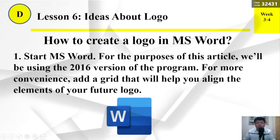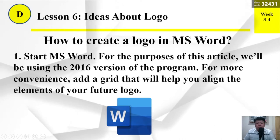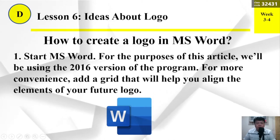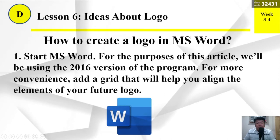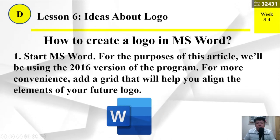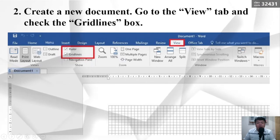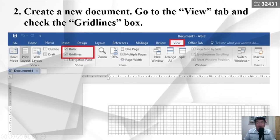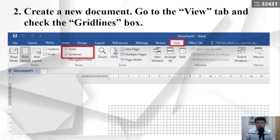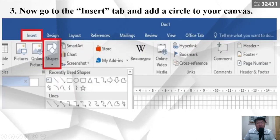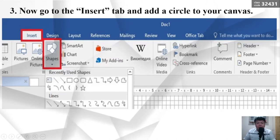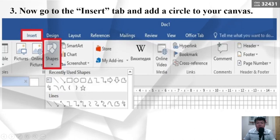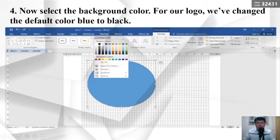How to create a logo in MS Word. Number 1: Start MS Word. For the purpose of this article, we'll be using the 2016 version of the program. For more convenience, add a grid that will help you align the elements of your future logo. Number 2: Create a new document, then go to the View tab and check the grid line box. Check the ruler and grid lines. Number 3: Go to the Insert tab and add a circle to your canvas — Insert, then choose Shapes.